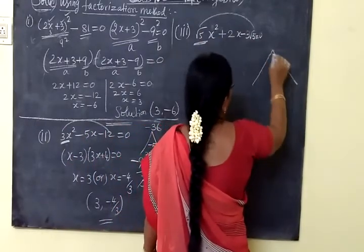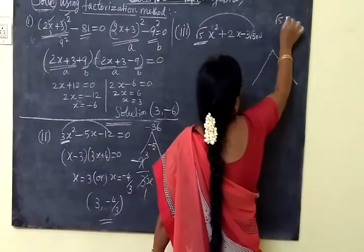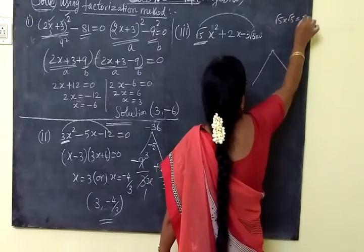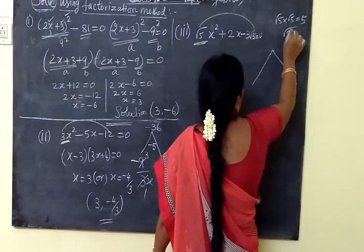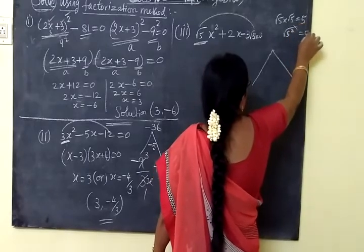Now we are taking this. So multiply it. We know root 5 into root 5. This will be 5. Because root 5 into root 5, 5 is 5. Root 5 is 5.